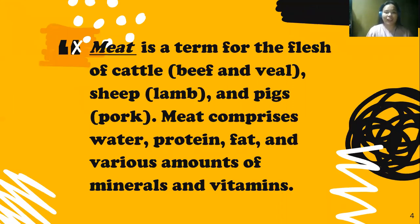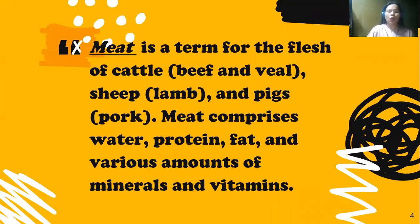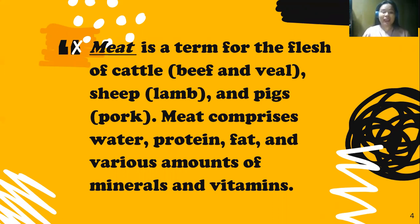Let us start by discussing what is meat. Meat is a term for flesh of cattle — beef and veal. Beef is the meat of cattle, while veal is the term for the meat of a young cow or cattle less than a year old. We also have pork, which comes from pig, and lamb, which comes from sheep. Meat also comprises water, protein, fat, and other amounts of minerals and vitamins.